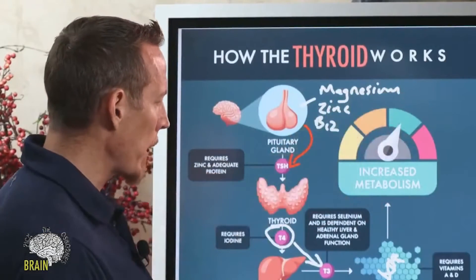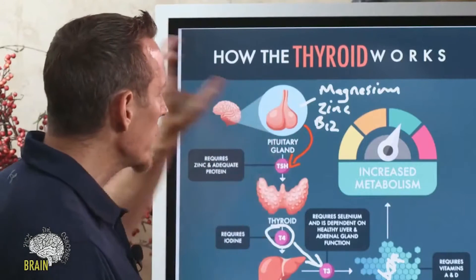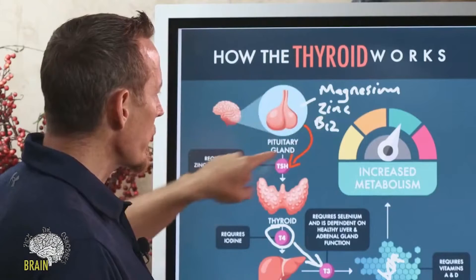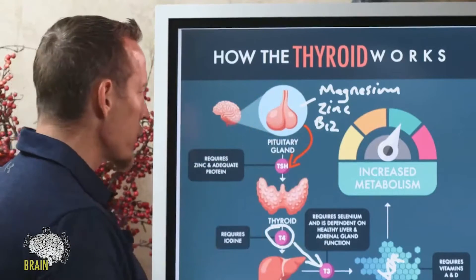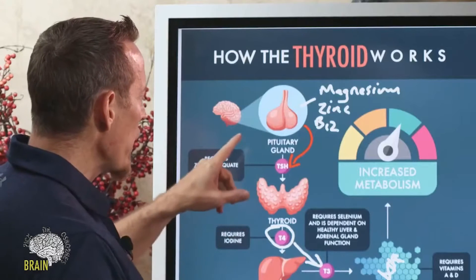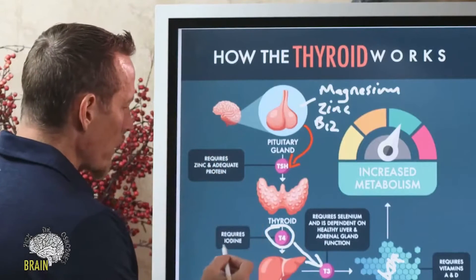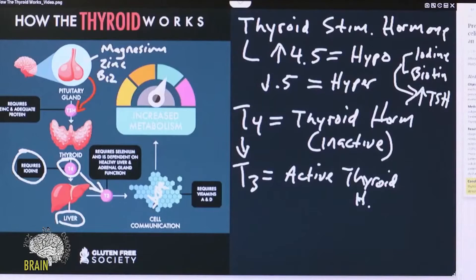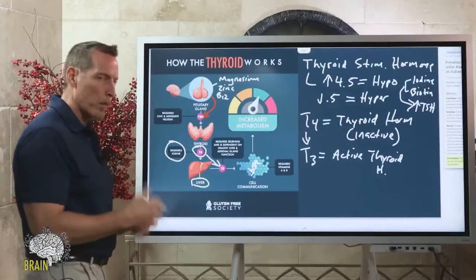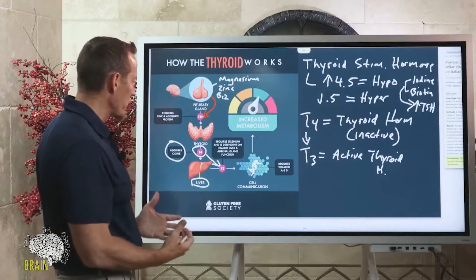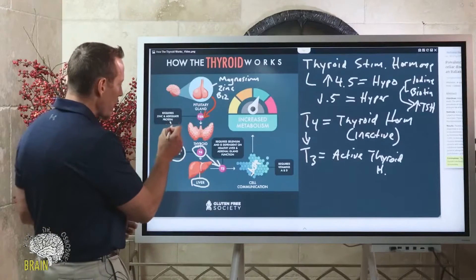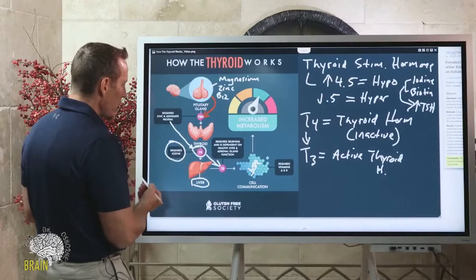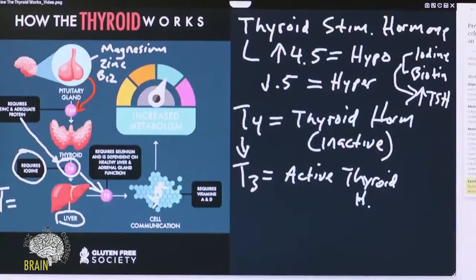T3 activates the DNA inside your cell, leading to an increase or regulation of your metabolic function. To produce T4, you need iodine — T4 is literally four molecules of iodine — and you also need protein, particularly the amino acid tyrosine, which you get from eating protein.